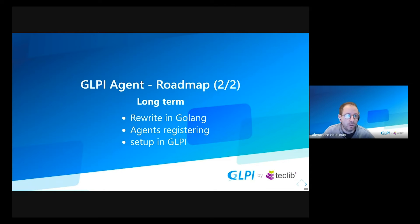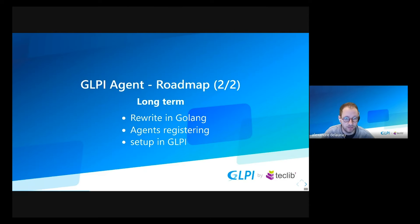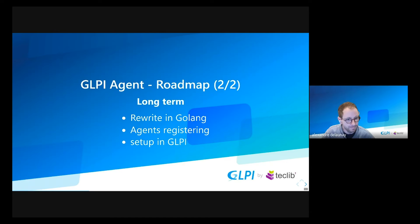In the longer term, we think about rewriting large parts of the agent and we have shortlisted Golang for that. The fact is the agent is written with the language Perl and recently finding developers comfortable with this language has been hard. So we'll try a prototype within the year to measure our capacity to switch to this new language. We plan also to enforce exchange between agents and backend by adding authentication or registration flows. This will be recommended, but you will be able to do simple exchange if you prefer. We still need to redo all forms to drive the agent remotely from the GLPI UI — this is still planned.